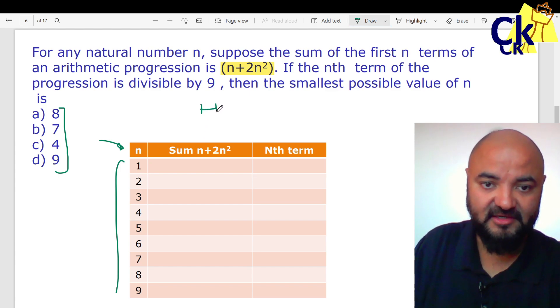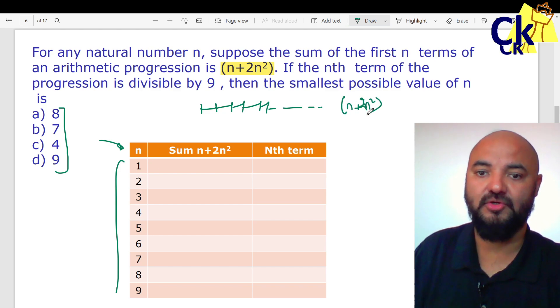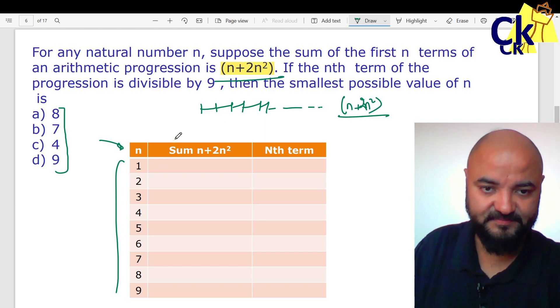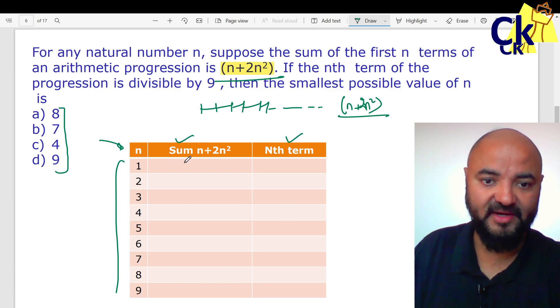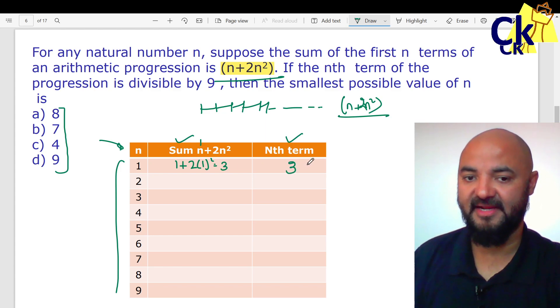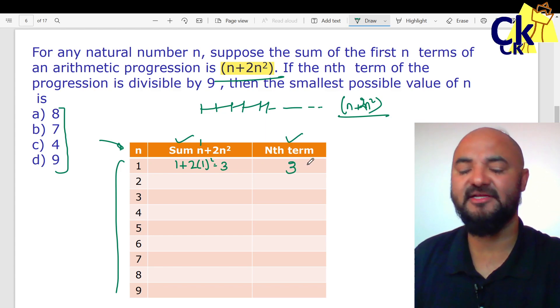Sum of n terms: 1, 2, 3, 4, 5... sum comes out to be (n+2n²) whole square. In this sum, the sum of n terms - if I put n equal to 1, sum of 1 term, which term remains? If I put n equal to 1, it comes to 1 plus 2 times 1 squared, which is 3. First term is 3. nth term in our case - n I put as 1, second term I got 3.